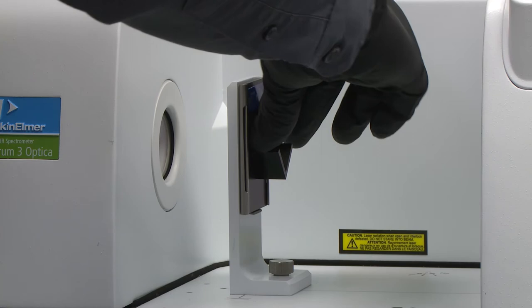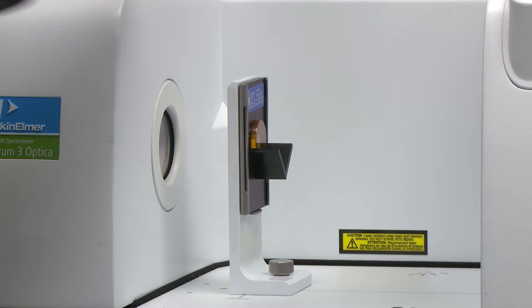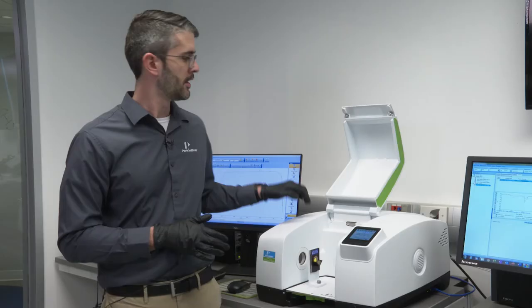When you place that sample within the beam path in an FTIR, because of the higher refractive index of the sample, a portion of light is actually reflected from the sample surface.